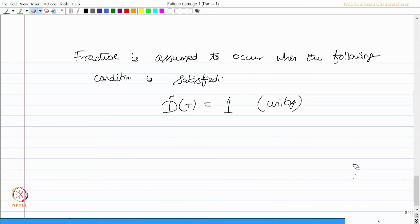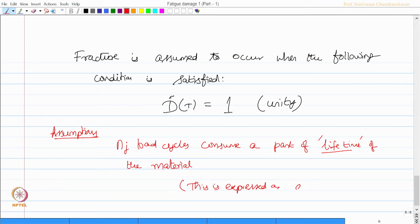The above hypothesis, this is an assumption, it says that N_j load cycles consumes a part of the lifetime of the material. This is expressed as accumulated damage which is d(T).